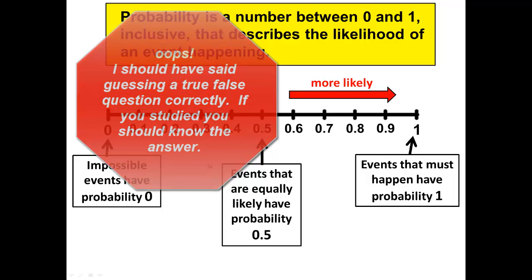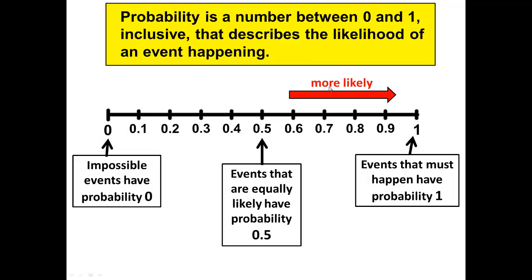Probabilities greater than 0.5 are more likely to happen. Those would be events such as the New England Patriots making the playoffs in football, as much as I hate to admit that, or the chance of rain on a cloudy day. It's more likely to happen than not.